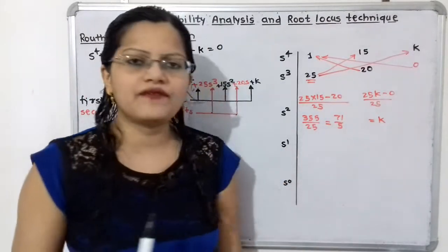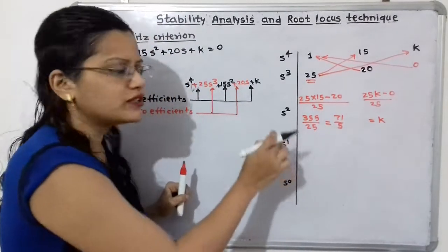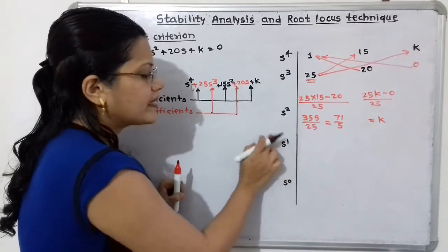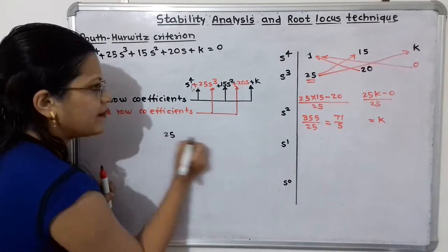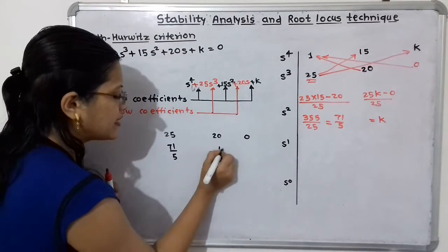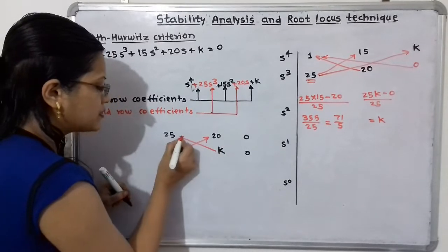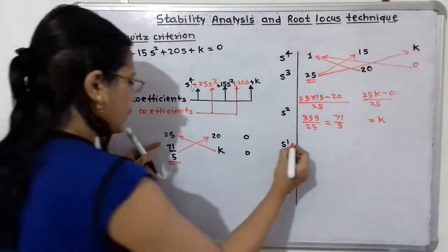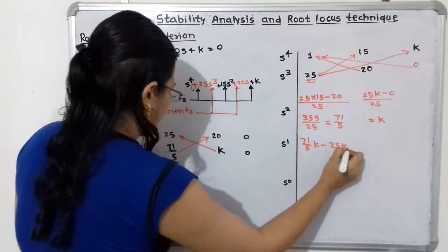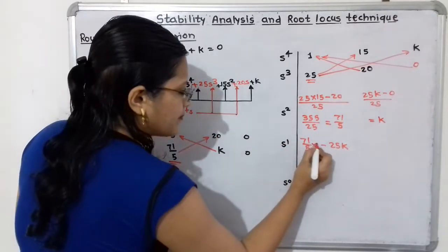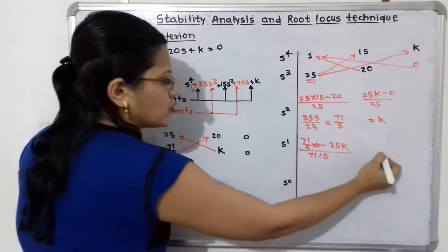Now for the row in front of S raised to 1, we repeat the same procedure, selecting the two rows above S raised to 1, that is the S cubed and S squared rows. So the numbers are 25, 20, 0 and 71 by 5, K, 0. The calculation is: 71 by 5 into 20 minus 25 into K, divided by 71 by 5. This simplifies to 284 minus 25K, divided by 71 by 5. The next element is 0.